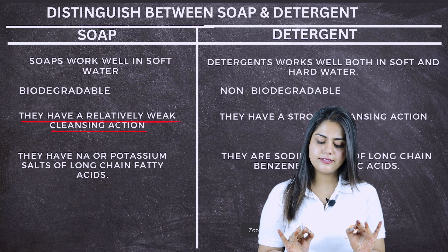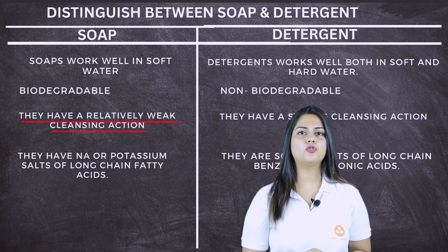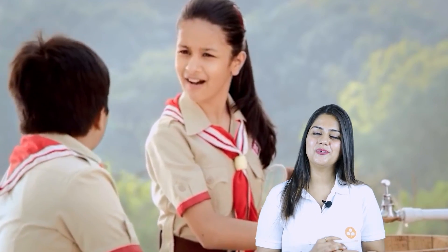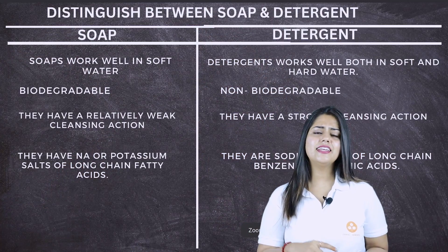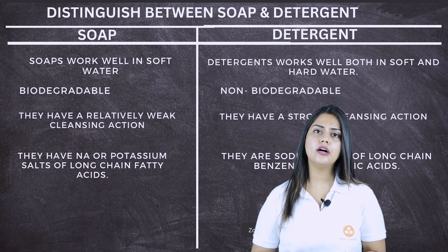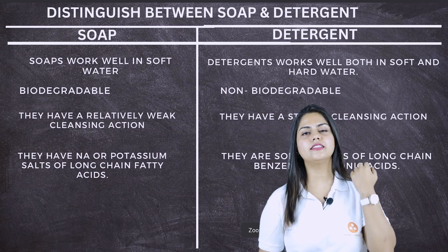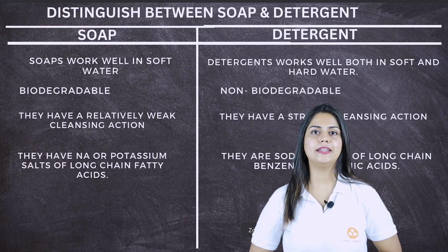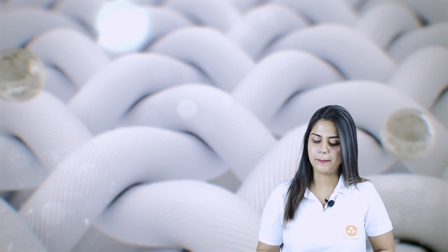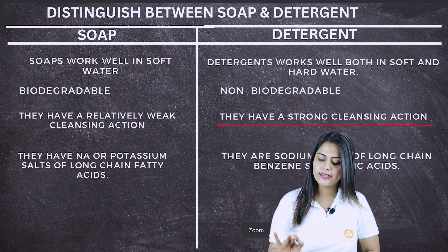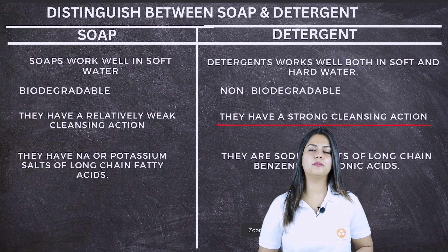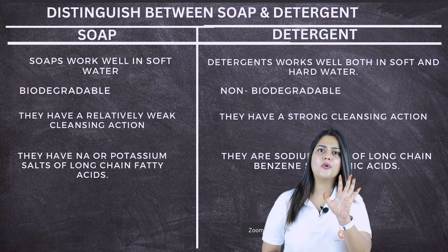The next difference: soap has a relatively weak cleansing action. Soap is a little slow in cleansing action. It is not that it is very slow, but if we compare it with detergent, it is slower. Detergent has a very strong cleansing action.